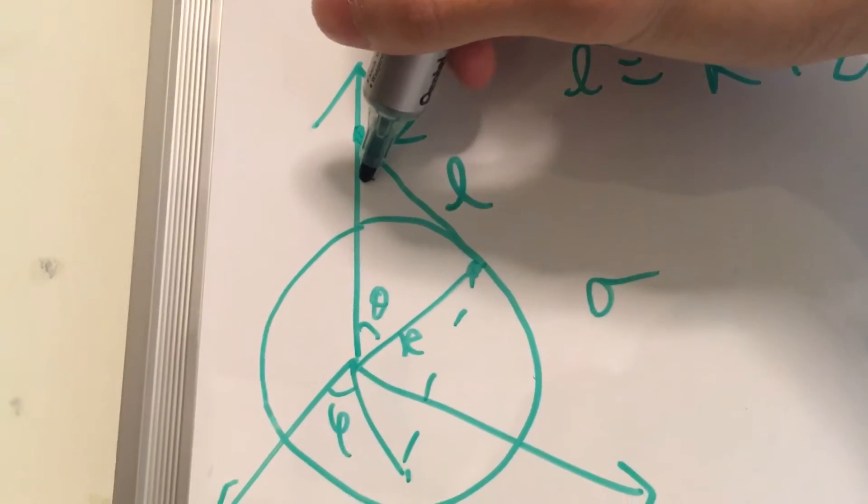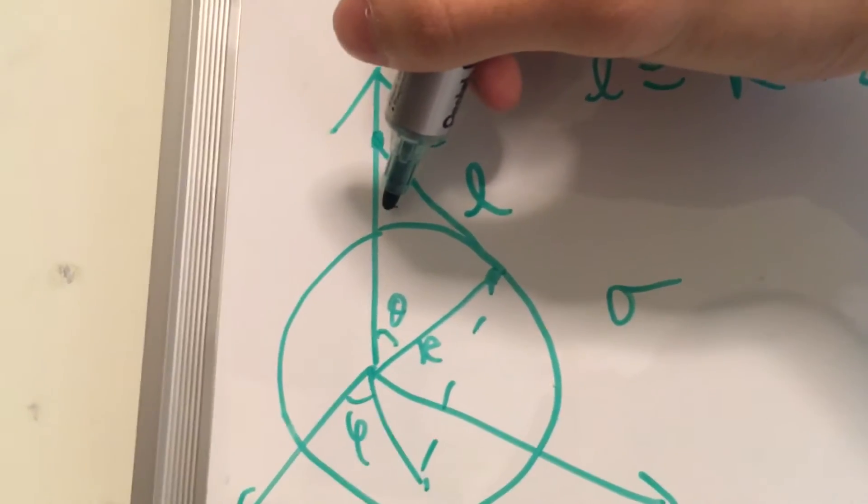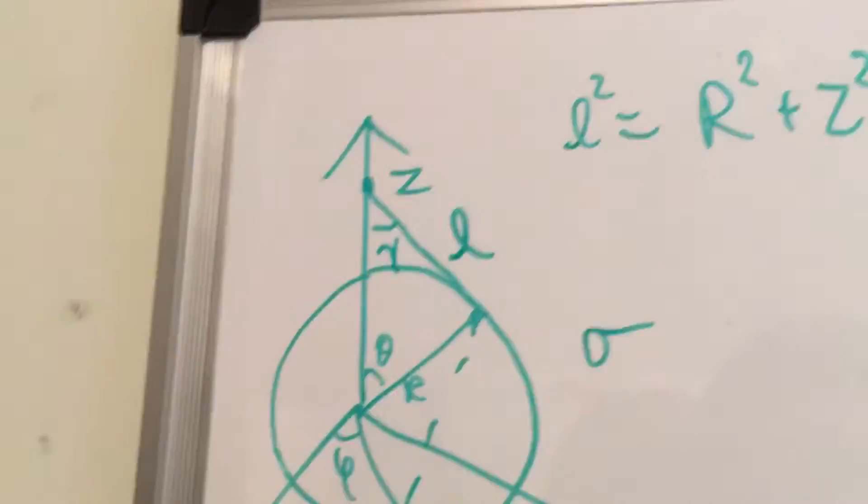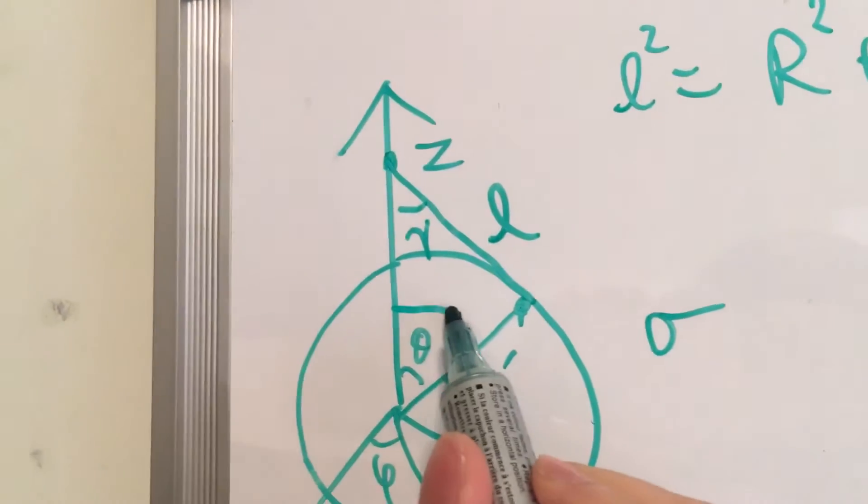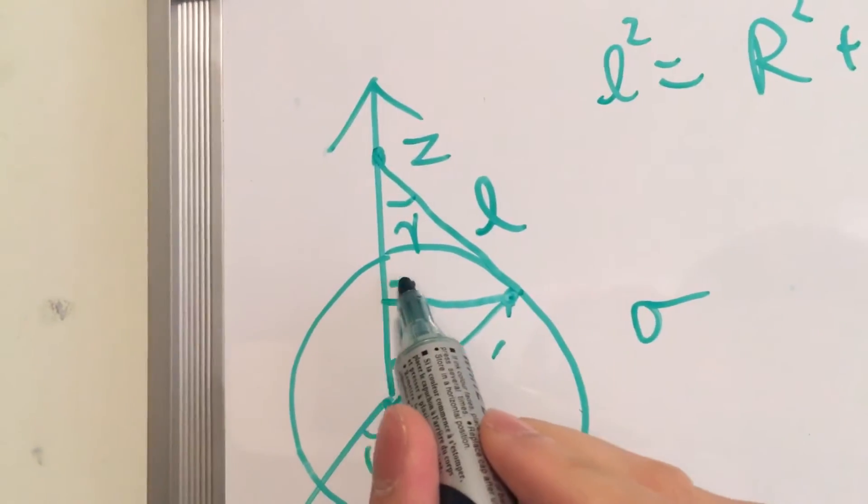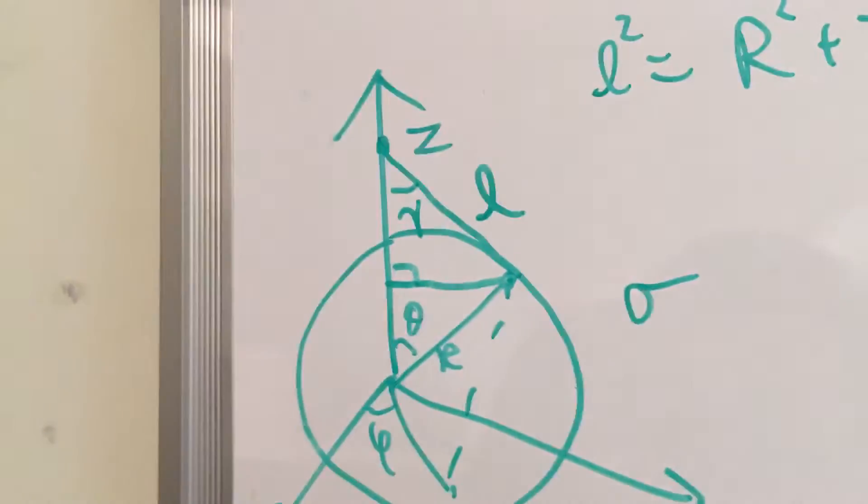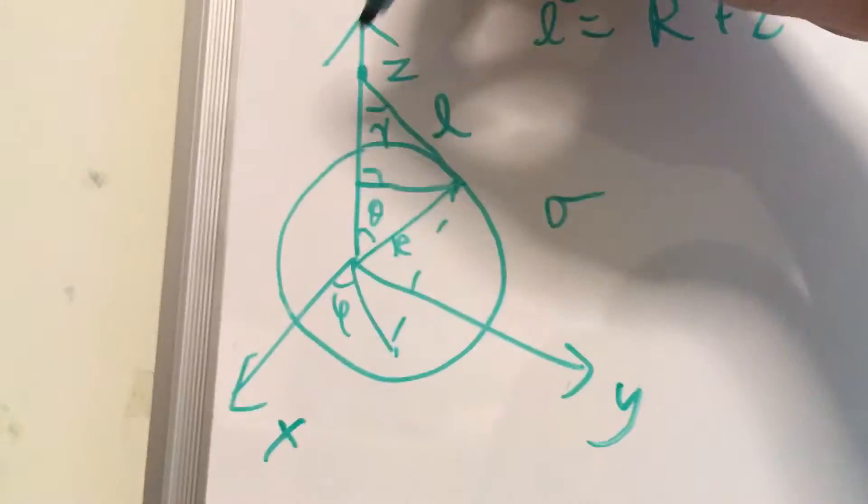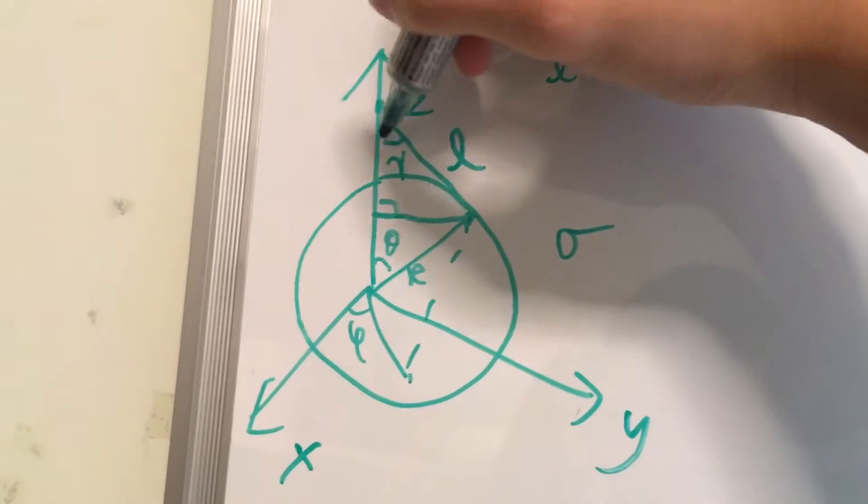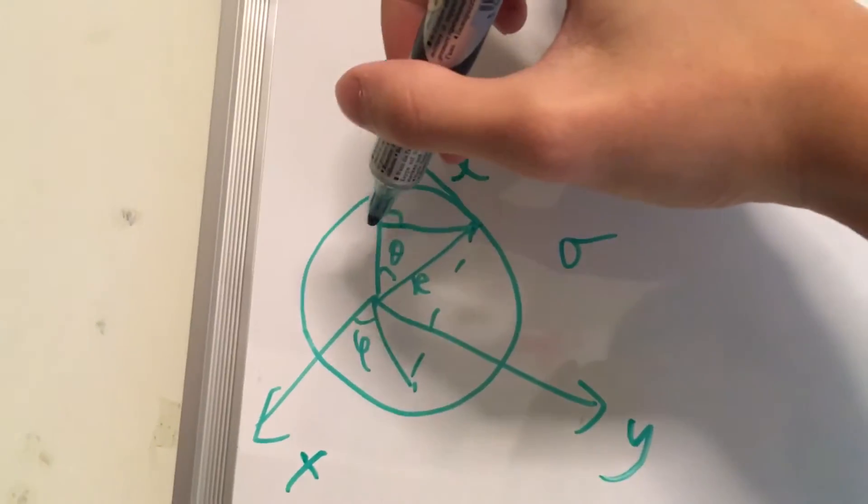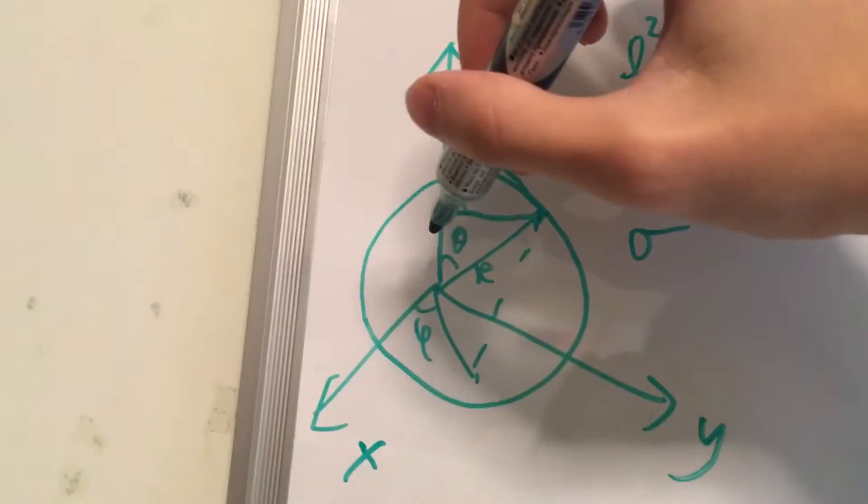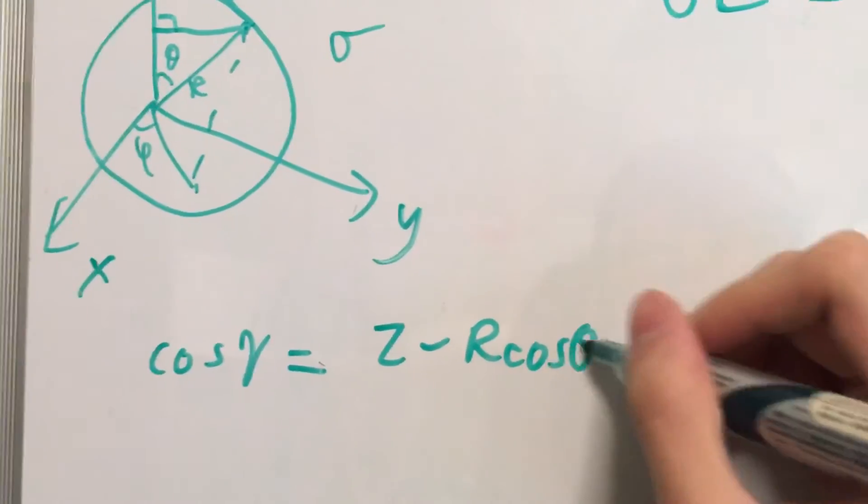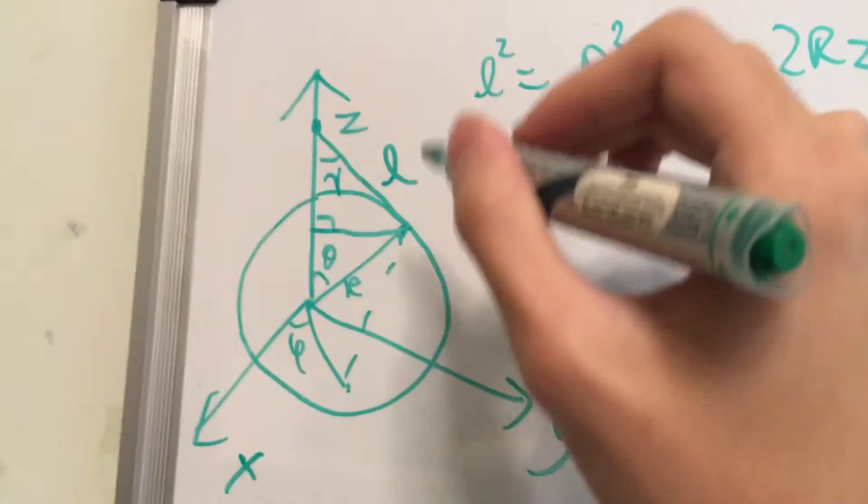And we can do that by finding this angle. We'll call that gamma for now. And now what's this gamma? It's actually relatively easy to find. We can just construct a line here. And cosine of gamma is just equal to this distance, which is this whole thing is z. This distance is r cosine of theta. So it's z minus r cosine of theta divided by this distance, L.